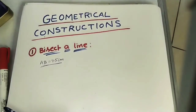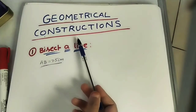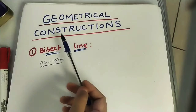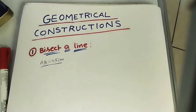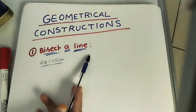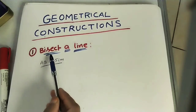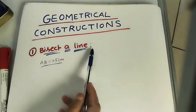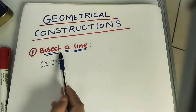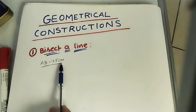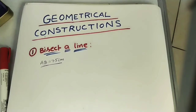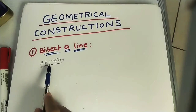Let's take geometrical constructions. In today's class we will see some problems on how to solve geometrical constructions by using drawing instruments. The first problem is bisecting a line, which means dividing the given line into two equal parts. For example, I am taking a line of 7.5 centimeters.